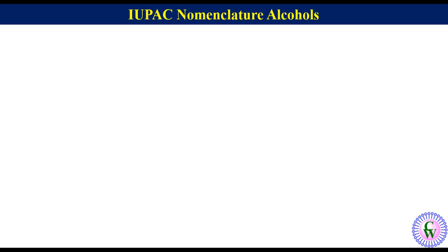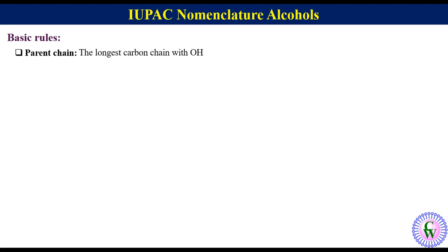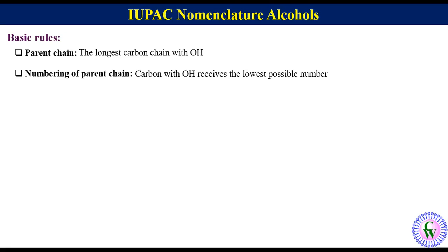There are certain basic rules which we should keep in mind while naming alcohols. The first rule is regarding the parent chain, which is the longest carbon chain containing OH. The second rule is regarding numbering of the parent chain — numbering is done in such a way that the carbon bearing OH receives the lowest possible number.